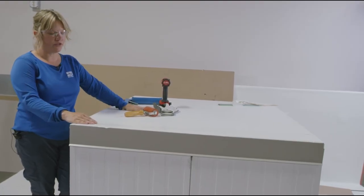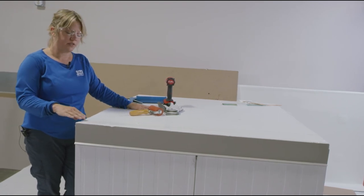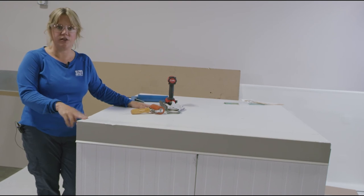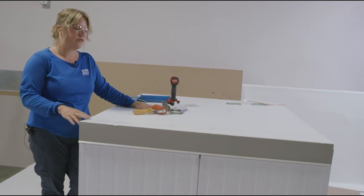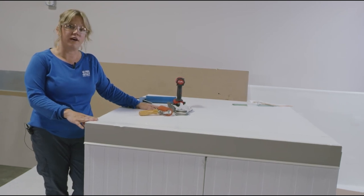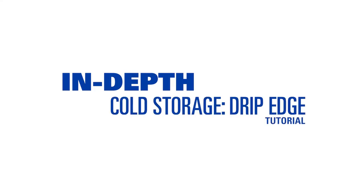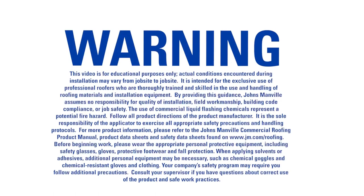So we have our completed drip edge detail for TPO membrane for cold storage. We have lots of redundancies in our air seal and our vapor seal, and this is going to be a good long lasting perimeter detail. If you have any questions on this or any of our other details, you can contact JM. And you can also find our complete cold storage design guide at JM.com.